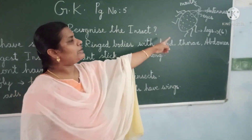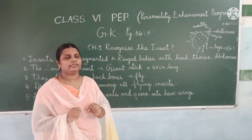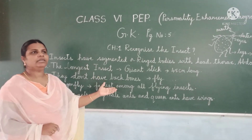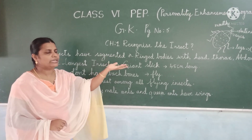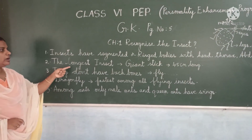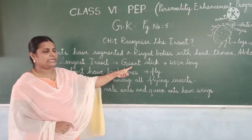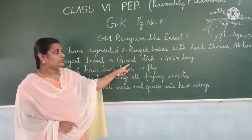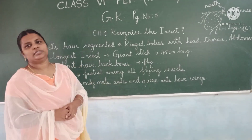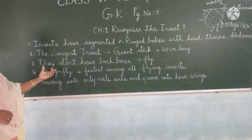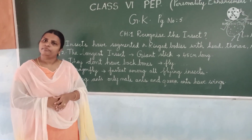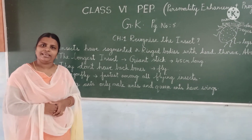Usually insects have six legs. So with that you can identify it as an insect. Among all the insects, the longest insect is the stick insect. It is about 45 centimetres long. And one more thing — they don't have backbones. Insects do not have backbones, but still they fly.